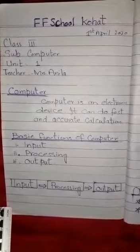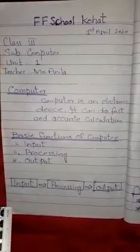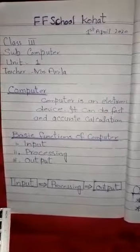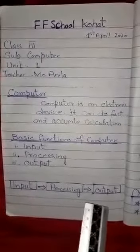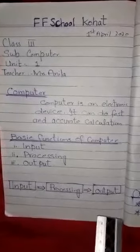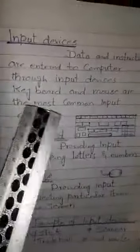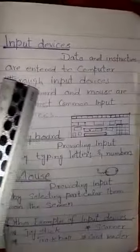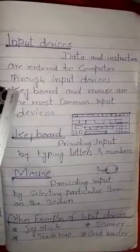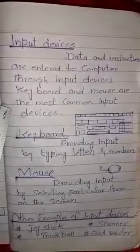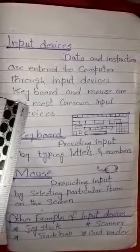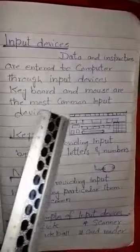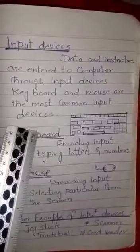The devices performing these functions are accordingly called input devices, processing device, and output device. The first is the input device — data and instructions are entered into the computer by input devices. The most common input devices are the keyboard and mouse.